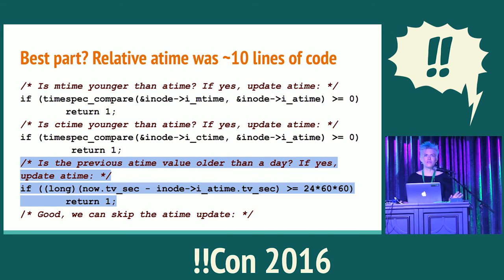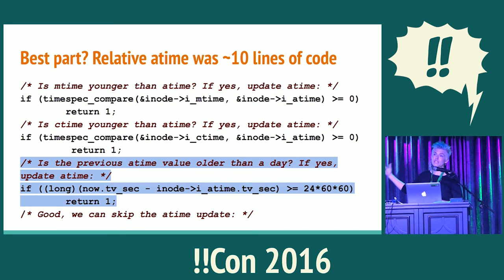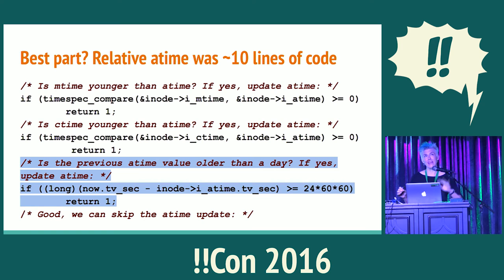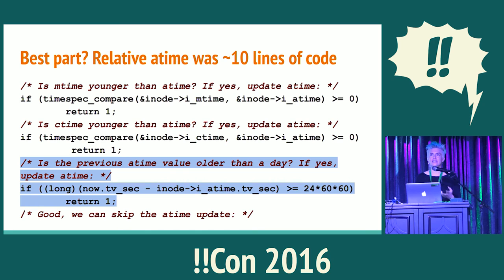The best part — I'm so proud of this — it was so simple I refused to patent it. Relative A-Time was about 10 lines of code in the kernel, with a little bit more in the file system utility tools to create the mount option. This is what got checked in — in 2009, yes, it took three years. It asks: is the current M-Time younger than A-Time? If so, update the A-Time. Or is the current C-Time younger? If the metadata changed, you want to update the A-Time as well. And if the old A-Time is more than 24 hours old, go ahead and update it again — there are certain programs that check if a file has been used recently and delete it if it hasn't, like temporary files in /tmp. Otherwise, skip the A-Time update.